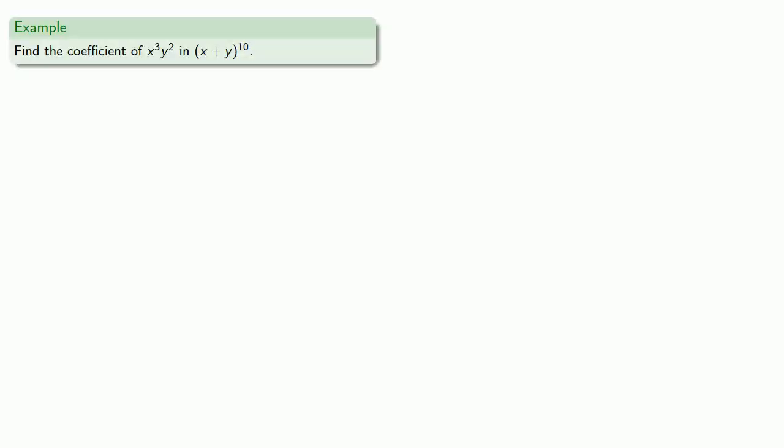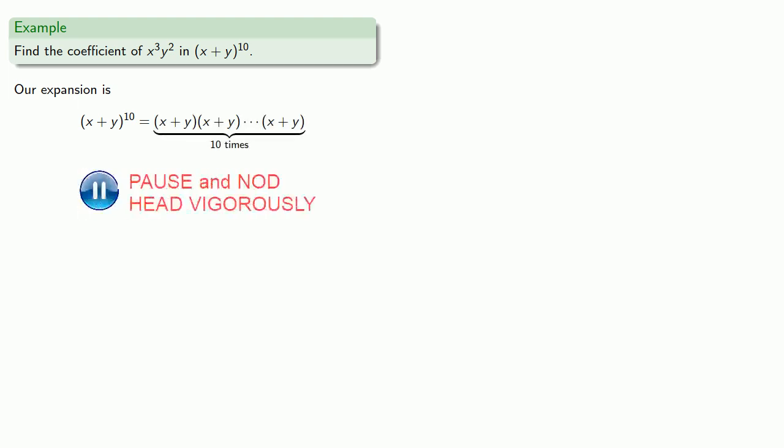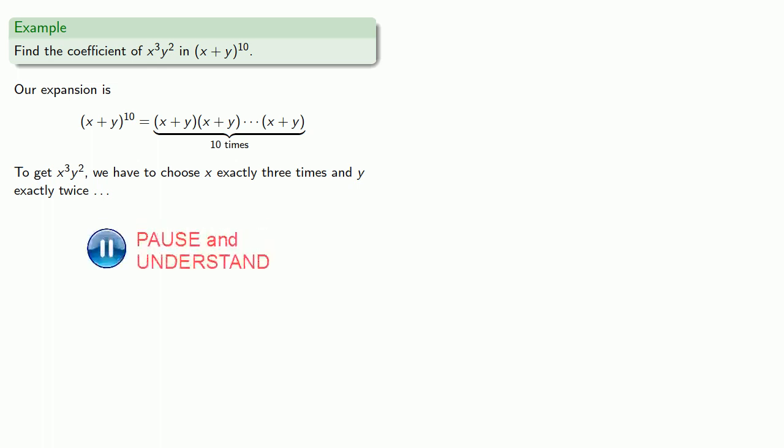For example, suppose I want to find the coefficient of x³y² in the tenth power of (x + y). It's helpful to remember (x + y)¹⁰ is the result of multiplying (x + y) by itself ten times. To get a term x³y², we have to choose x exactly three times and y exactly twice. But since there are ten factors, we can't do that.